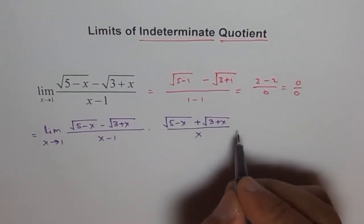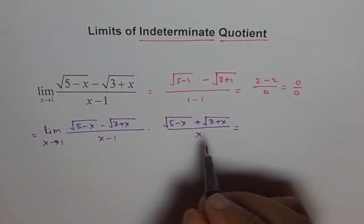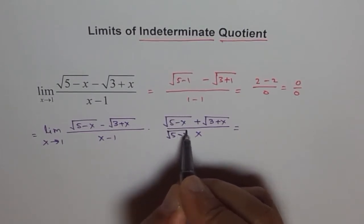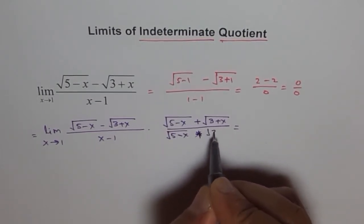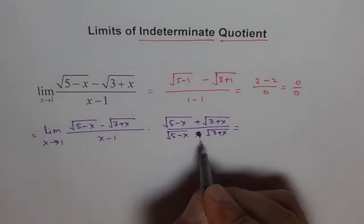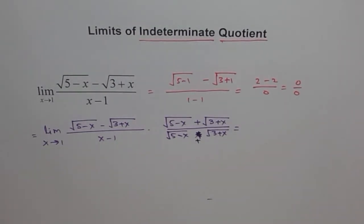Oh sorry, I have to write the whole thing, not just x, that's my mistake. Square root of 5 minus x plus square root of 3 plus x. Let me correct it here by writing plus like this.